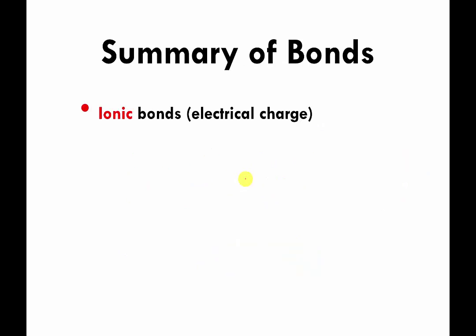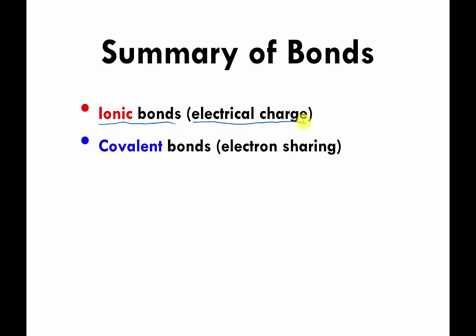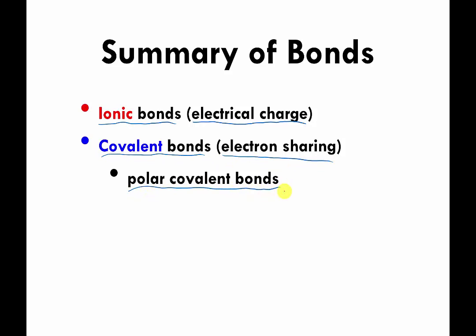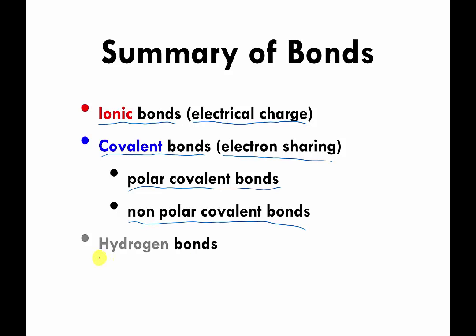So that's it for this unit. Here's a big summary: we've talked about ionic bonds — atoms sticking together because of opposite electrical charges; covalent bonds — atoms sticking together because they're sharing electrons; polar covalent bonds — atoms sharing electrons unequally; nonpolar covalent bonds — atoms sharing electrons equally; and hydrogen bonds — which are caused when polar covalent bonds create partial positive and partial negative charges. Good luck, bye-bye.